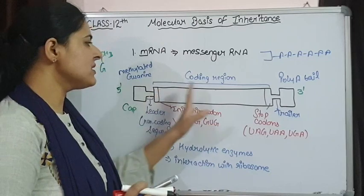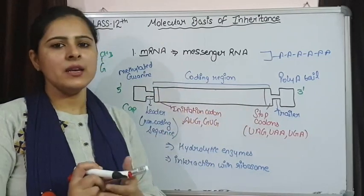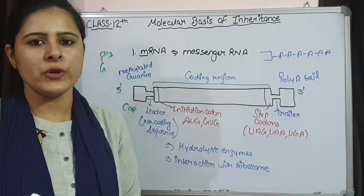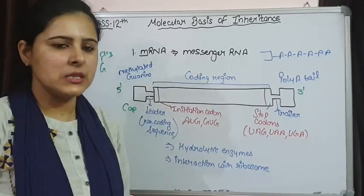Another important thing is this 5 prime region has to come in contact with the ribosome because protein synthesis will be done by ribosomes and information is present in mRNA. So this mRNA is going to interact with the ribosome, and this portion is also helping in interaction with the ribosome. When this mRNA will interact with the ribosome then protein synthesis will start. This is how mRNA is present and its different structures are helping in the process of protein synthesis.